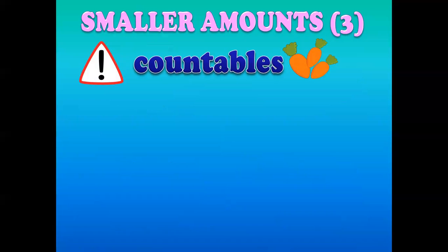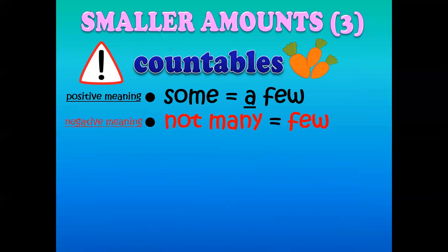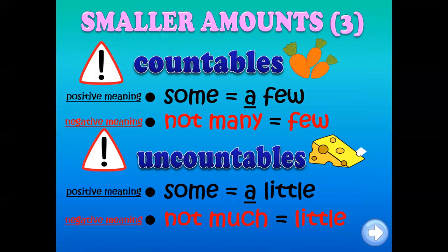Smaller amounts, number three — countables: positive meaning is some or a few; negative meaning is not many or few. Uncountables: positive meaning is some or a little; negative meaning is not much or little. It depends on the emphasis you want to express. If you want a positive meaning with countable nouns, use some or a few; for negative, use not many or few. For uncountable nouns, positive is some or a little; negative is not much or little. Using the negative meaning expresses that you want to complain about something or that you are not feeling happy about it.